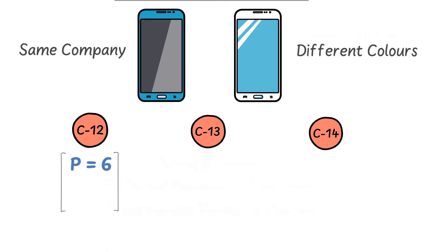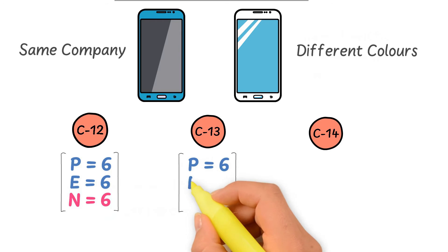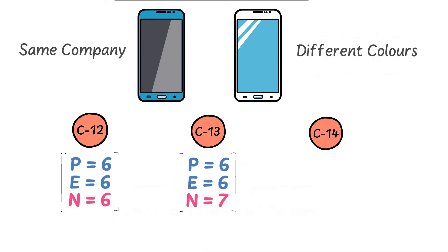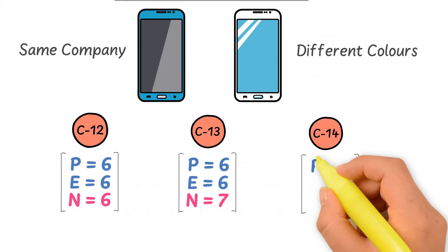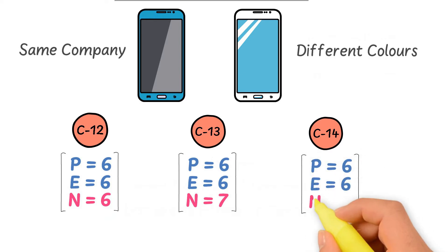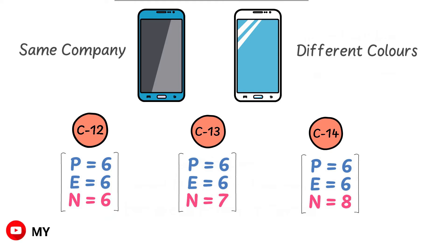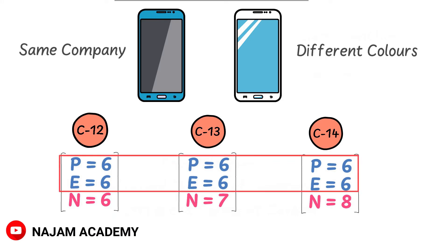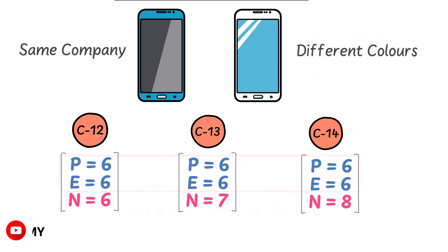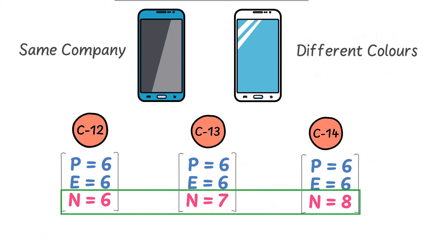In carbon-12 there are six protons, six electrons, and six neutrons. In carbon-13 there are six protons, six electrons, and seven neutrons. While in carbon-14 there are six protons, six electrons, and eight neutrons. From this example you can learn that all these carbon atoms have the same number of protons and electrons, but they have a different number of neutrons.